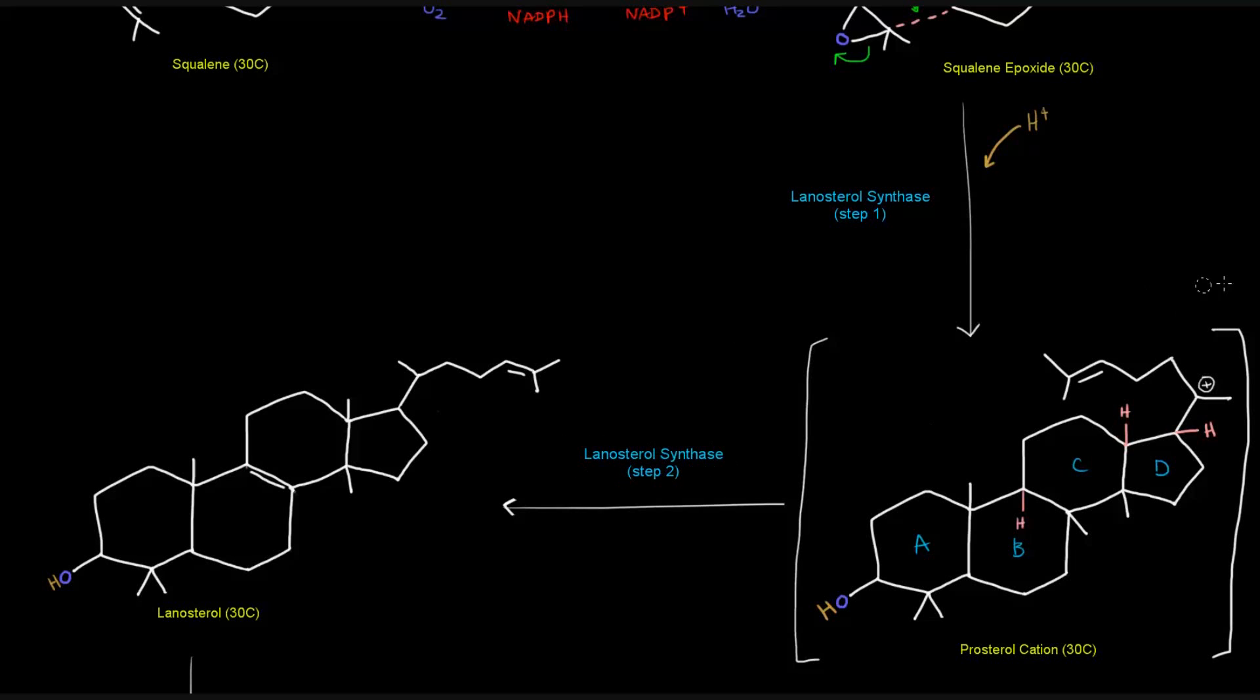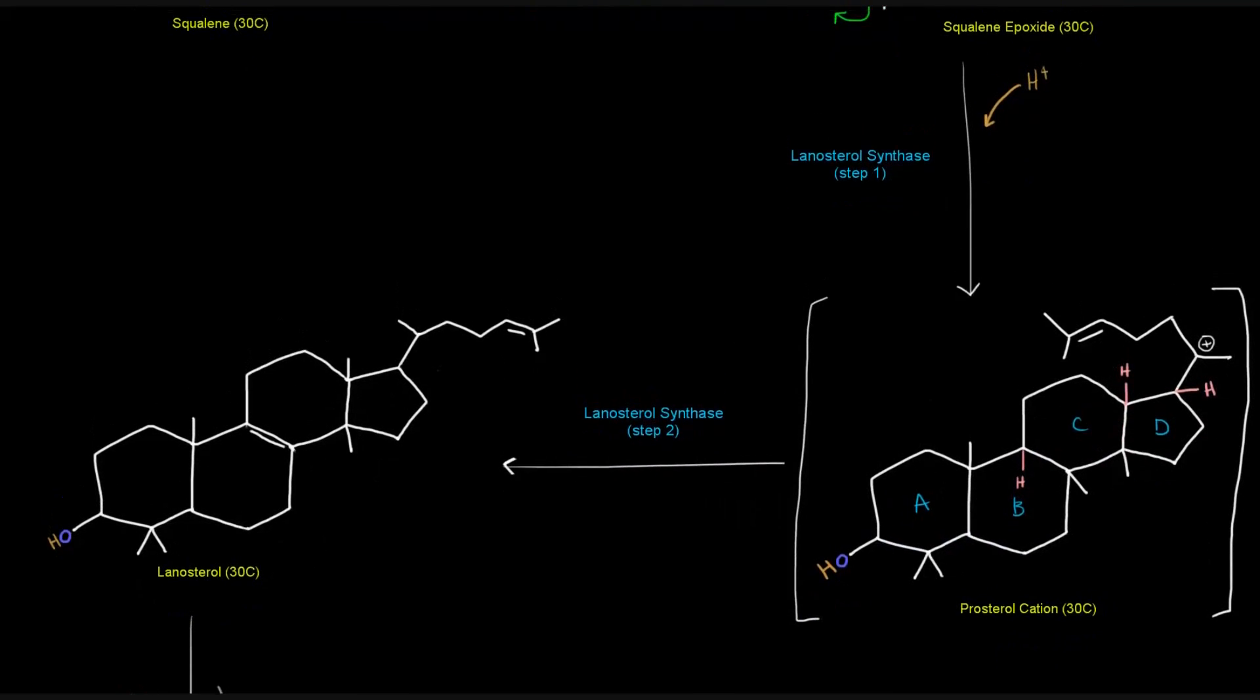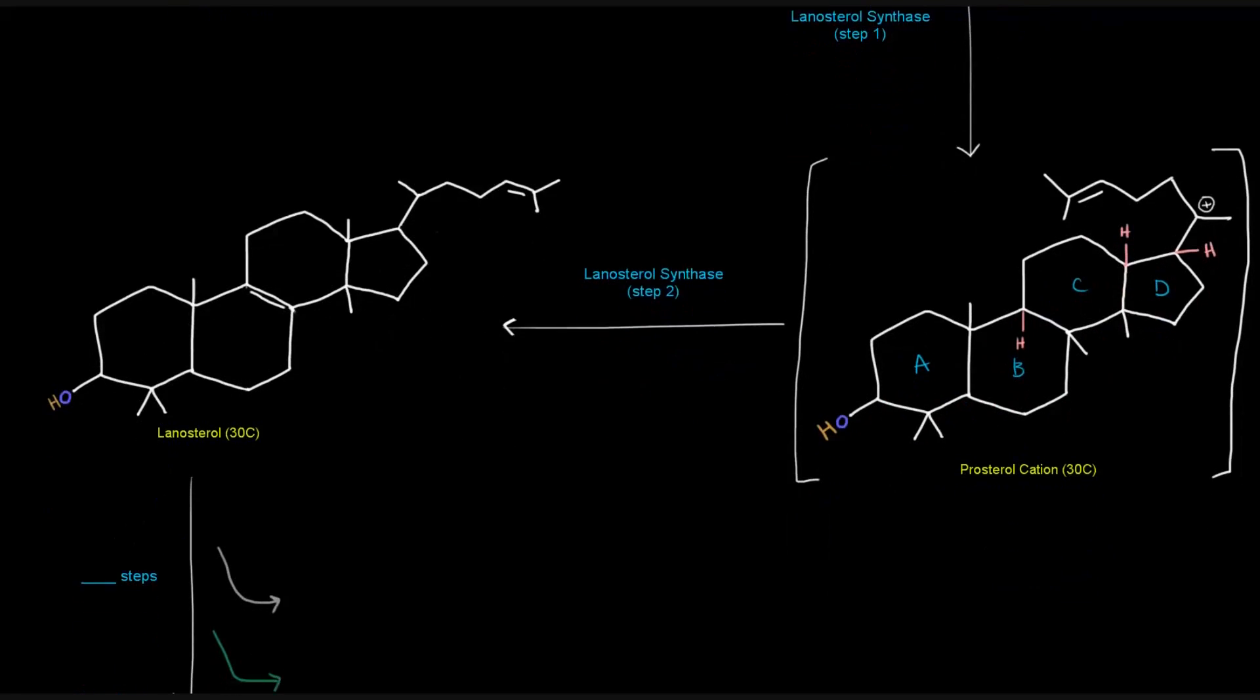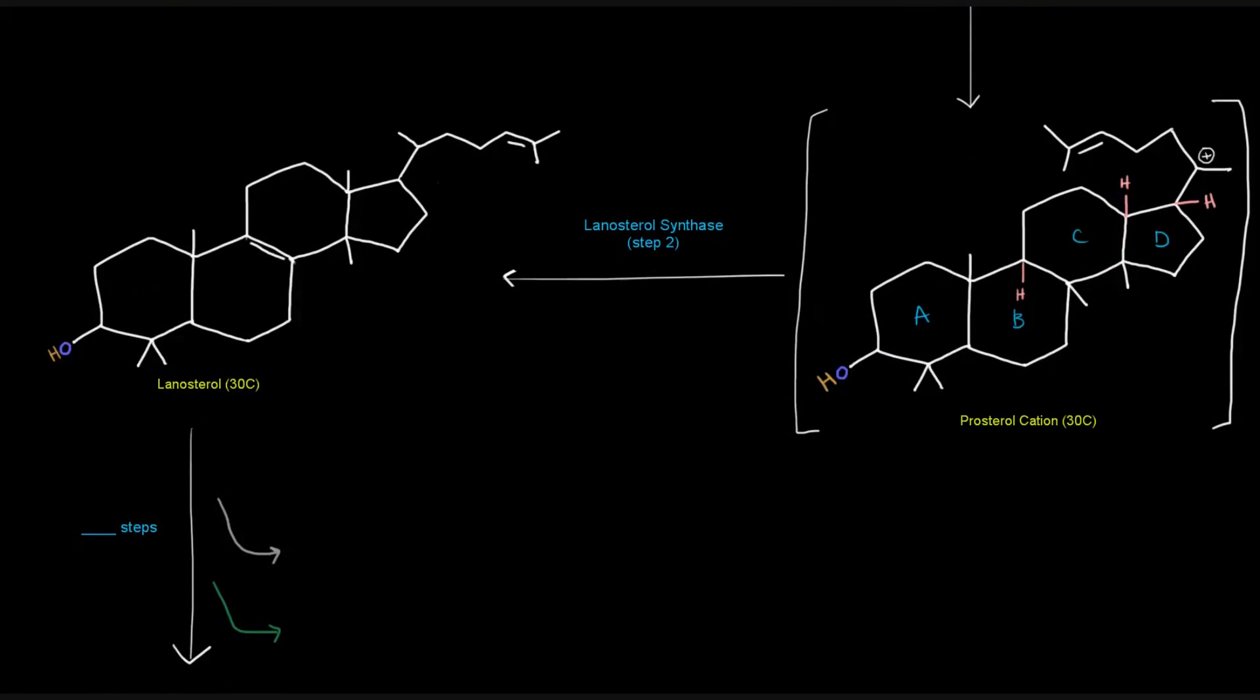This intermediate forms in a two-step process catalyzed by lanosterol synthase. So in the second step here, the cation is converted to lanosterol, which is shown here. And lanosterol is one of the key precursors to cholesterol, the end product. And you can see how similar this is to cholesterol,